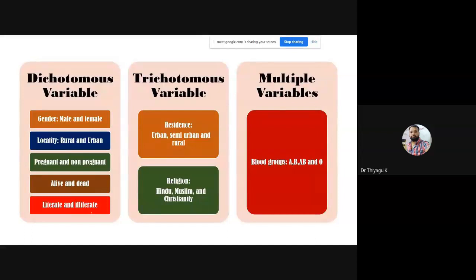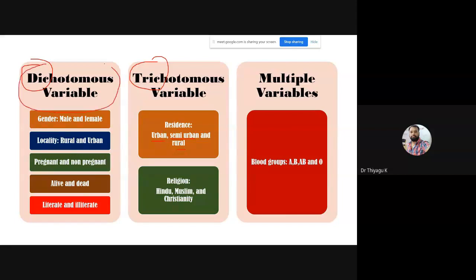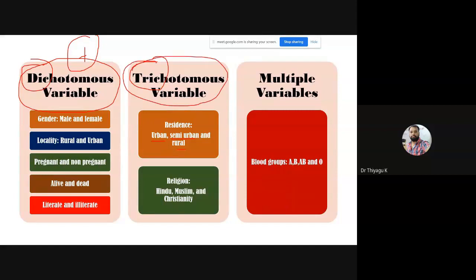In the demographic variable, there is a dichotomous variable — if you have only two classifications like male and female, or rural and urban, then it is called dichotomous. 'Di' represents two. 'Tri' represents three — if you classify the demographic variable into three, it is called trichotomous, like urban, semi-urban, and rural. Normally in the case of a dichotomous variable, if you take it as the independent variable, you can go with the T-test, since the T-test assumption is that the independent variable should have only two categories. But in the case of ANOVA, the independent variable should have at least three classifications — then you can go with ANOVA or ANCOVA. If there are more than three subcategories, it is called a multiple variable.